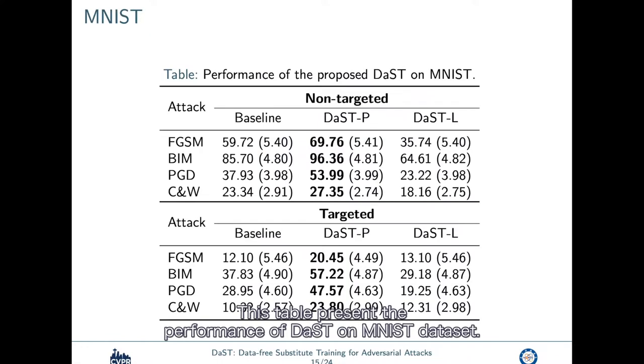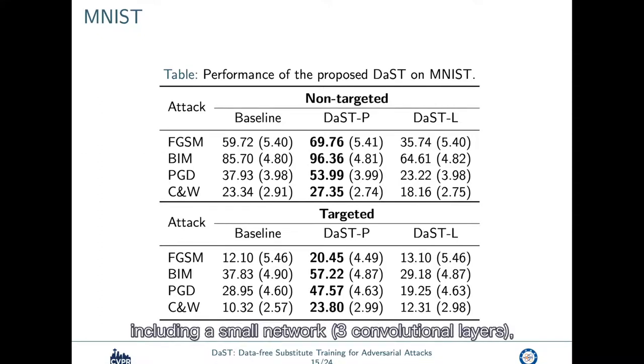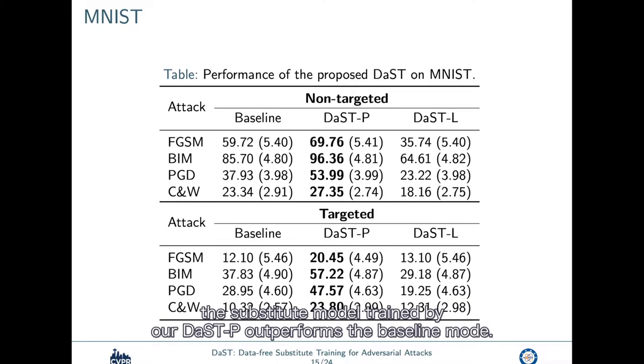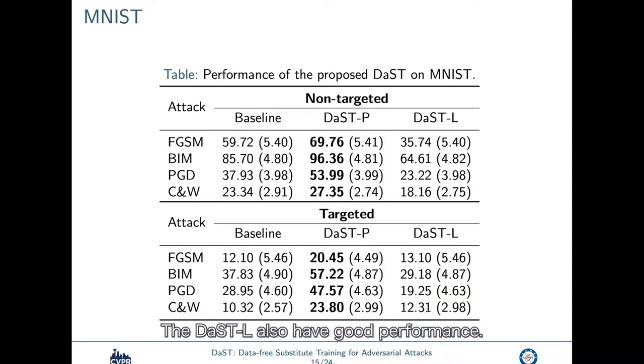This table presents the performance of DES on MNIST dataset. For the experiments on MNIST, we designed three different network architectures, including a small network which has three convolutional layers, a medium network which has four convolutional layers, and a large network which has five convolutional layers. We use the large net as the attacked model and the large net as the architectures of the baseline model trained by the original dataset and the subsidial model in DES. The experiment shows that the subsidial model trained by our DESP outperforms the baseline model. The DESL also has good performance.